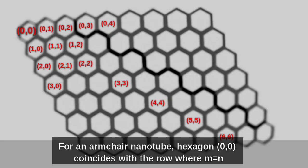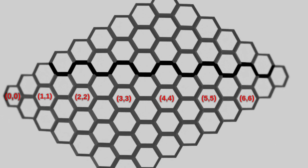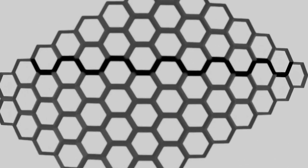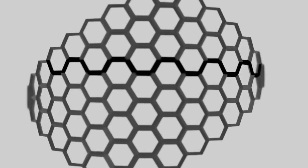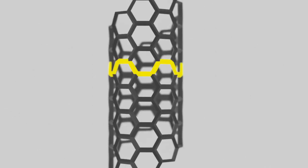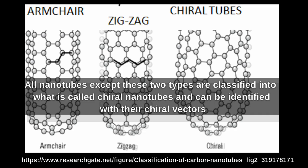For an armchair nanotube, hexagon (0, 0) coincides with the row where m equals n. All nanotubes except these two types are classified into what is called chiral nanotubes and can be identified with their chiral vector.